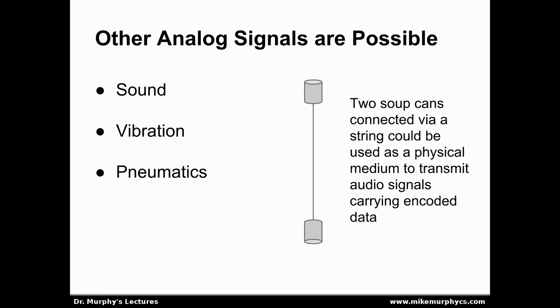It is possible to use other types of analog signals, however. We could use sound, vibration, or pneumatics. Here I have an example of two soup cans connected by a piece of string. We could technically send audio signals down the string as vibrations and transmit data that way. We don't typically do this, however, because the speed at which vibration moves down the piece of string is much, much slower than the speed of an electrical signal down a piece of wire of the same length. So we'll typically use electromagnetic signals, but it is possible to use other types.